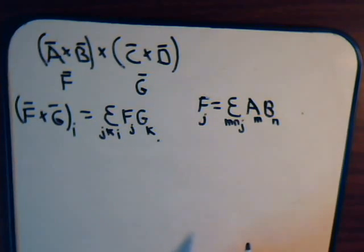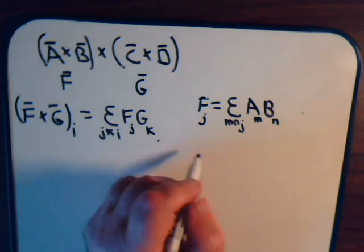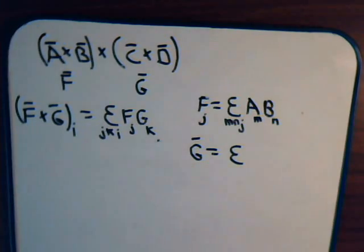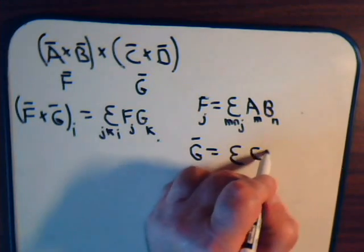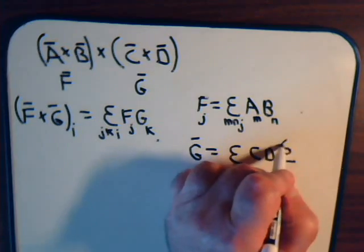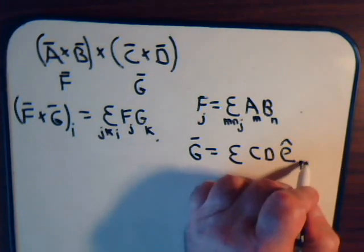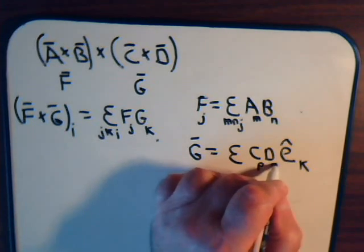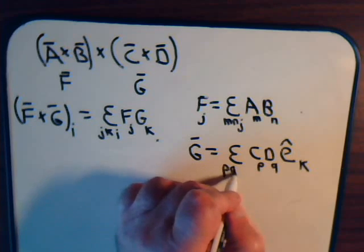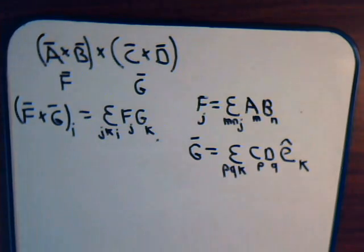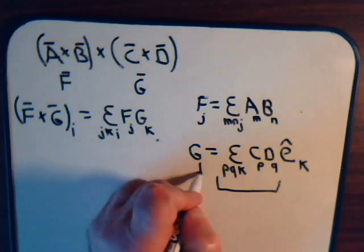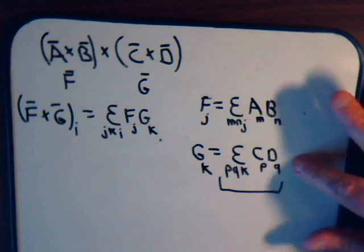And now we have an expression for f of j, do the same setup for g, and say that vector g equals epsilon c d times some unit vector. And we want a k-th component, so this would be k, and we used p and q for our labels. So you have p, q, k, and the k-th component of vector g is just this part. So let's say g of k equals this.